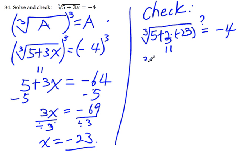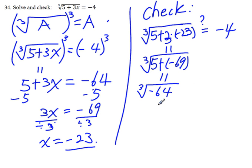And then we evaluate this. Cube root of 5 plus 3 times negative 23 is negative 69, and this equals cube root of negative 64. And we know that negative 64...